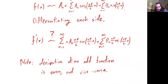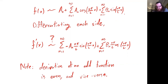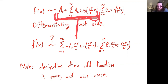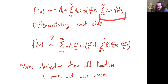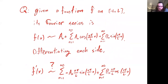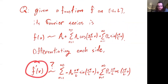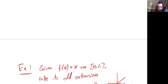One thing to note: the derivative of an odd function is going to be an even function, and the derivative of an even function is going to be an odd function. We can see that explicitly here — taking the derivative of the even cosine part gives an odd function via the sines, and taking the derivative of the odd sine part gives an even function via the cosines. So when is the derivative of the Fourier series the Fourier series of the derivative?